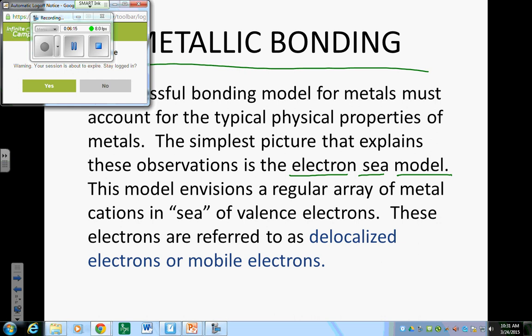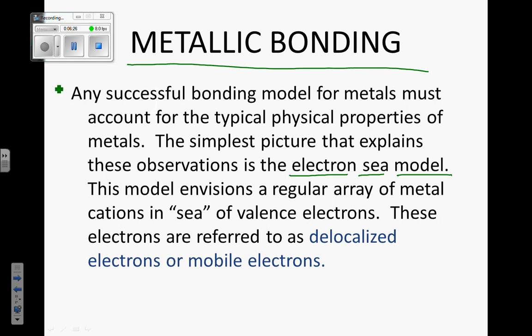Electron is huge because all bonding is described in terms of electrons — this is the most important thing. What does it mean when you spell S-E-A? Water, ocean — correct. It could be called the electron ocean model or the electron liquid model, but it's called the electron sea model. This model envisions a regular array of metal cations and a sea of valence electrons. These electrons are referred to as delocalized or mobile electrons.